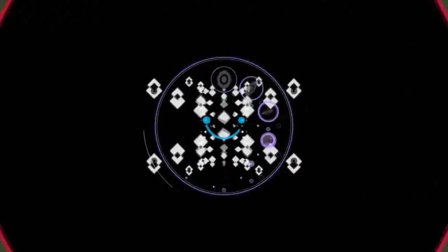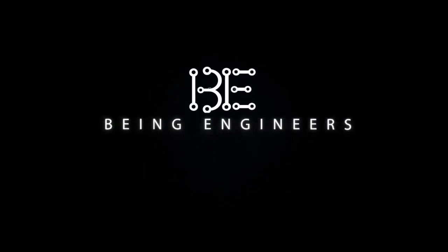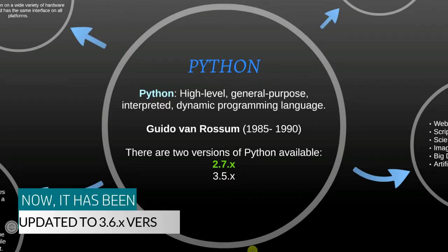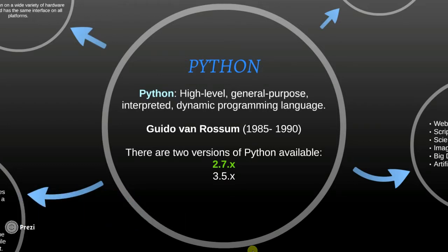So let's begin. What is Python? Python is a high-level, general-purpose, interpreted, dynamic programming language. It was created by Guido van Rossum during 1985 to 1990. There are two versions of Python available: 2.7.x and 3.5.x, and in this course we will be covering the 2.7.x version.